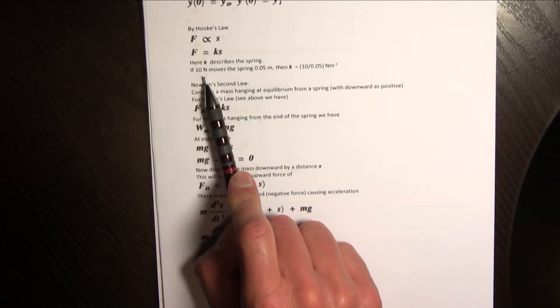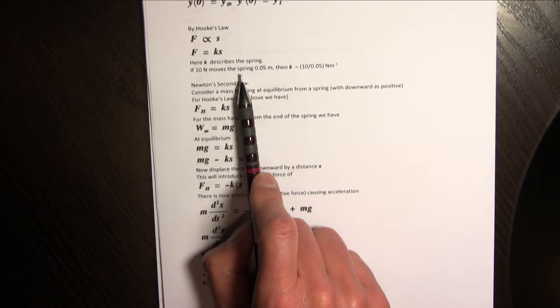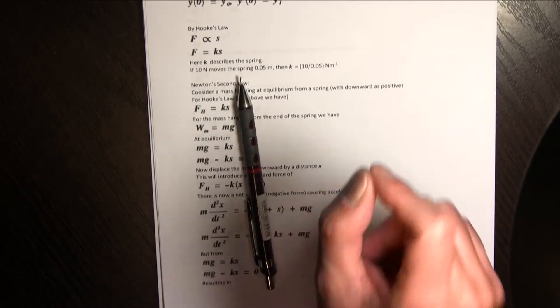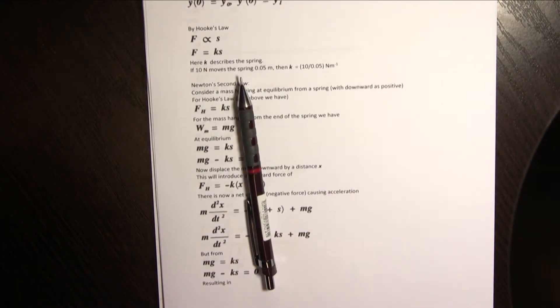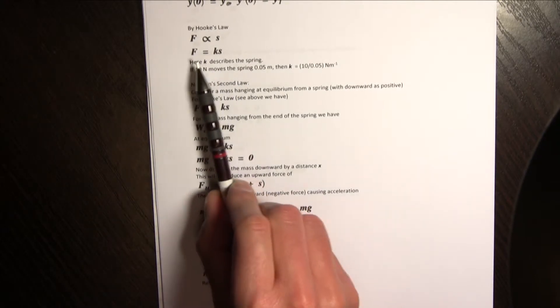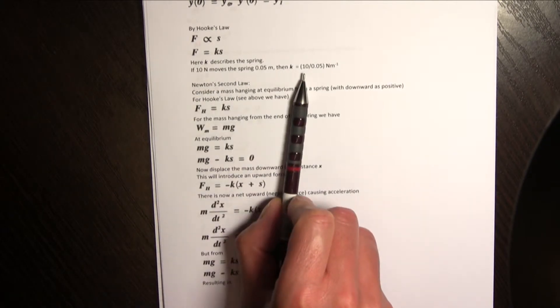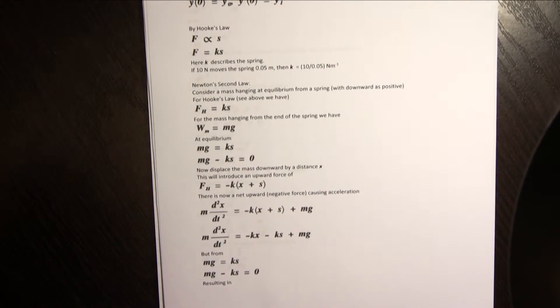So for instance if I hang 10 newtons worth of weight from the spring and it pulls that spring out 5 centimeters there then I can just have k equals f divided by s so that's 10 divided by 0.05 newtons per meter and that would be my spring constant.